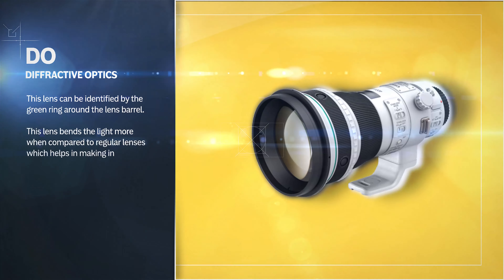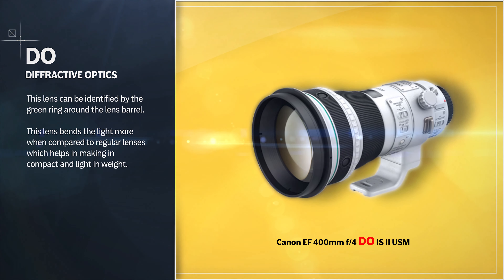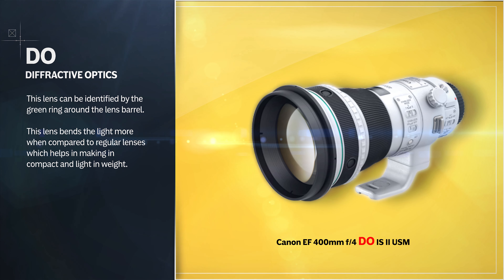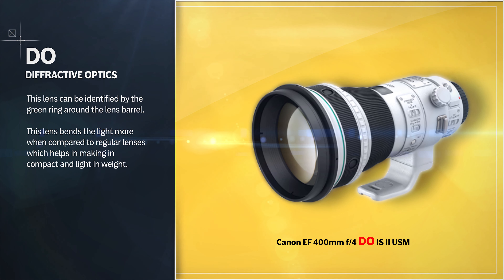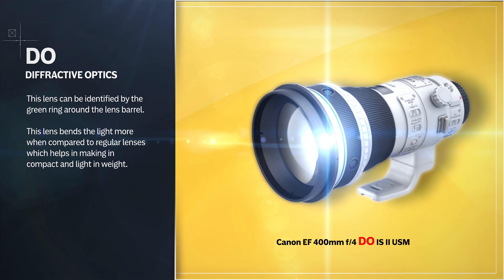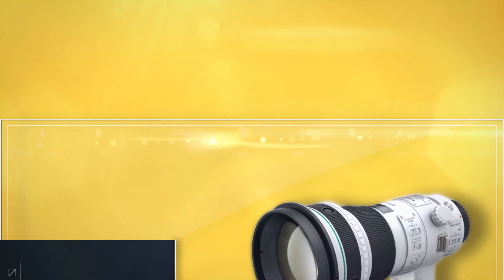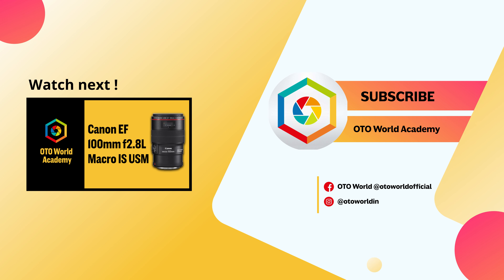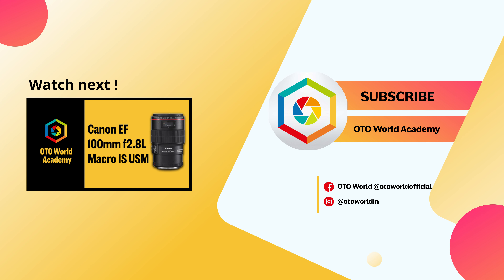DO stands for Diffractive Optics. This lens can be identified by the green ring around the lens barrel. It bends light more compared to regular lenses, which helps in making it compact and light in weight. Thank you for watching the video from Autoworld Academy. If you want to learn more about photography and want to stay updated with the latest, then do subscribe to our channel and do not forget to like and share.